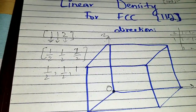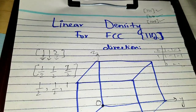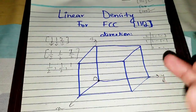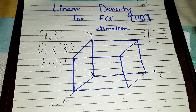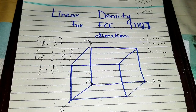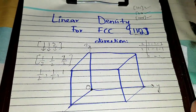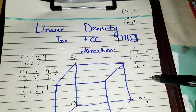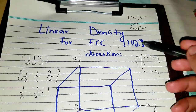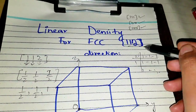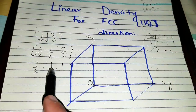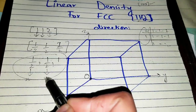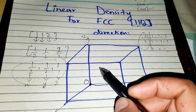Dividing each Miller index by the LCM (which is 2), we get 1/2, 1/2, and 1. These are the final coordinates of the [112] direction so that it lies within a single unit cell. Note: only non-zero Miller indices are taken in the LCM process. If zero is one of the Miller indices, you do not include it. After dividing, you get the final coordinates: 1/2 for x, 1/2 for y, and 1 for z.